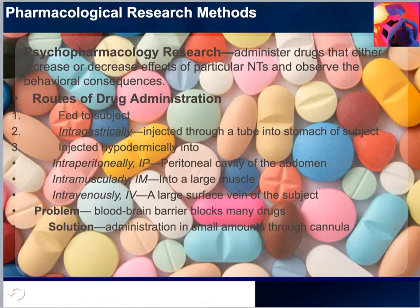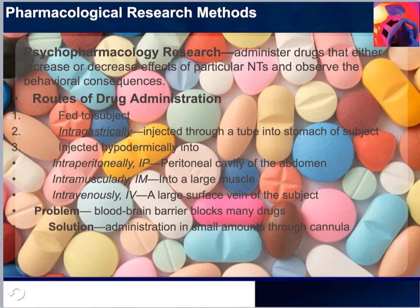Selective chemical lesions — basically the effects of surgical, electrolytic, or cryogenic lesions — are frequently difficult to interpret because they affect all neurons in the target area. In some cases, it is possible to make more selective lesions by injecting neurotoxins, which are poisons that have an affinity for certain components of the nervous system.